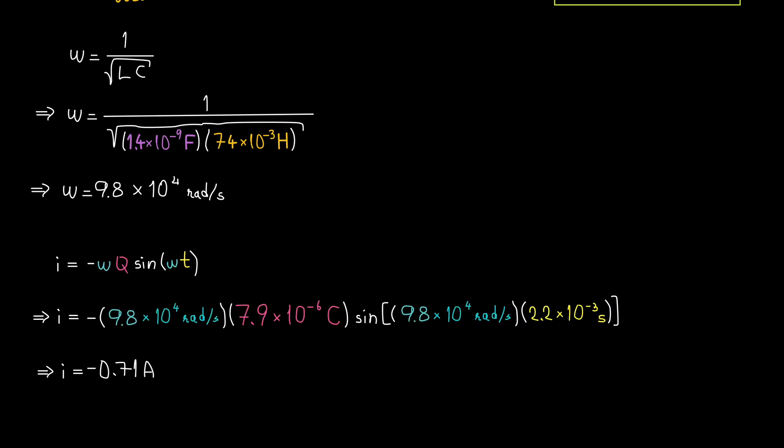Let's first calculate the angular frequency and current. Angular frequency equals 1 over square root of LC, and we get 9.8 times 10 to the 4th radians per second.